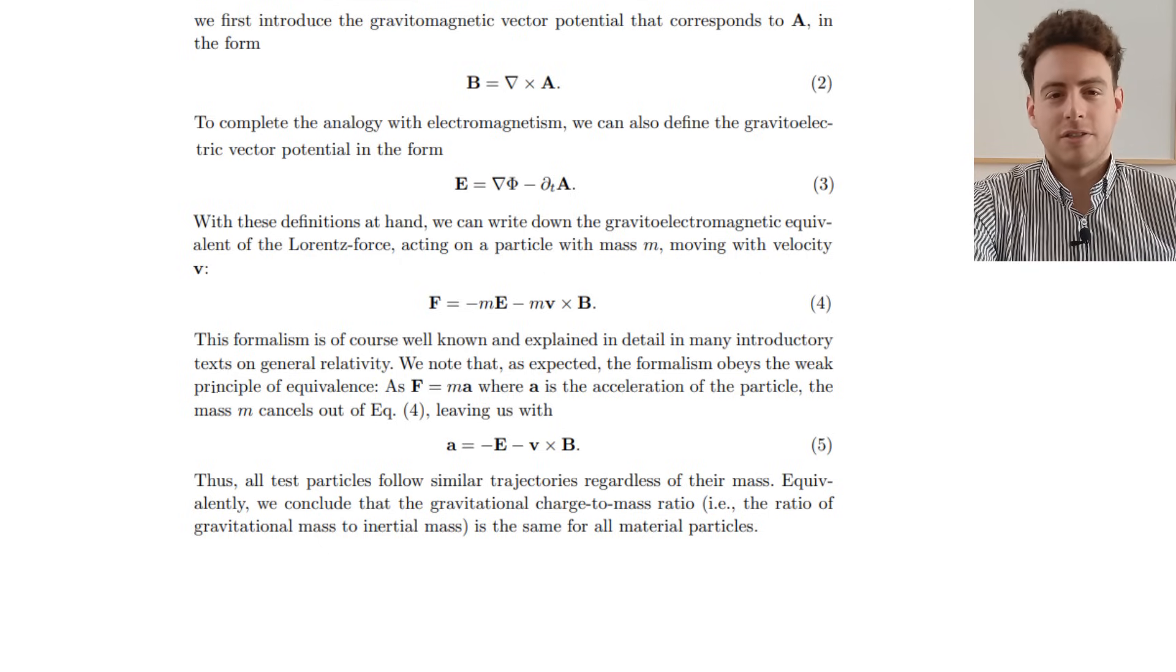The gravitomagnetic equivalent of the Lorentz force acting on a particle with mass m and velocity v results in an acceleration value which is independent of the mass of the particle to satisfy the equivalence principle that depends on the gravito-electric potential E, the velocity of the mass, and the gravitomagnetic potential B.